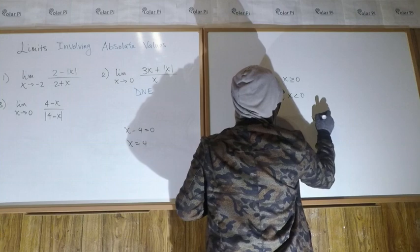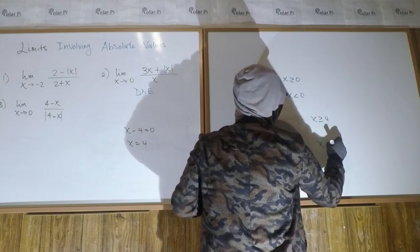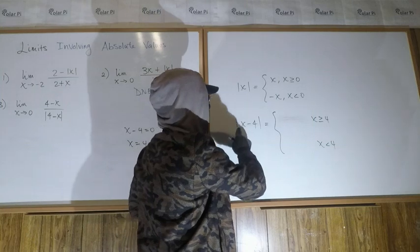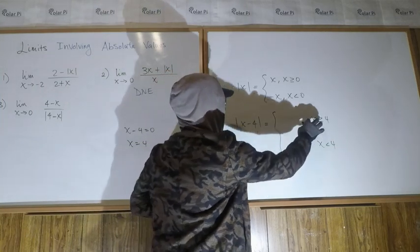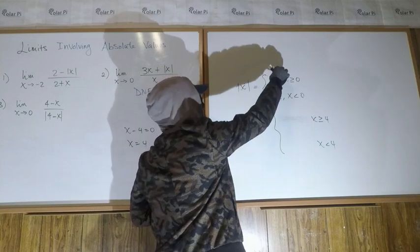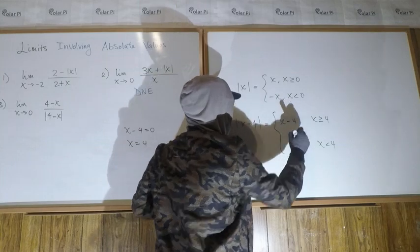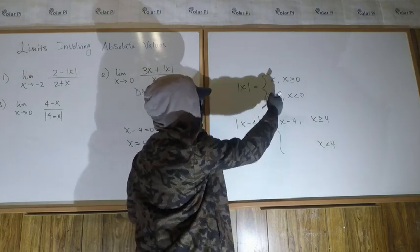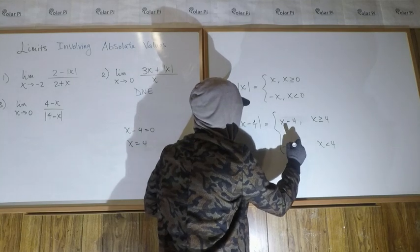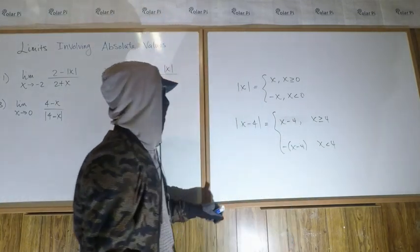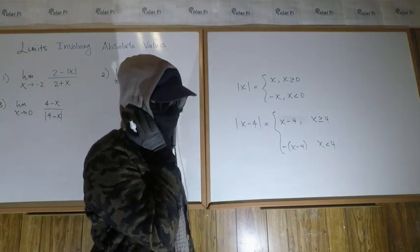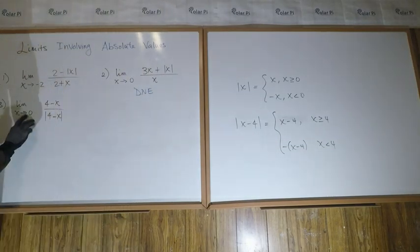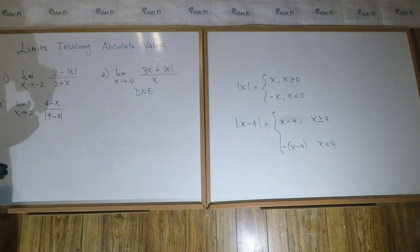When x is greater than or equal to 4, plugging in 5: 5 minus 4 is positive, so the absolute value of (x minus 4) is simply x minus 4. When x is less than 4, plugging in 2: 2 minus 4 is negative, so we take the negative of the inside, giving negative (x minus 4), which is 4 minus x.